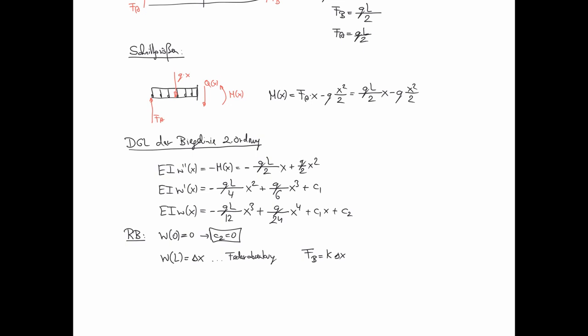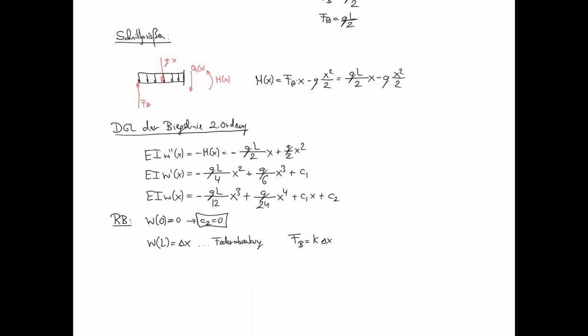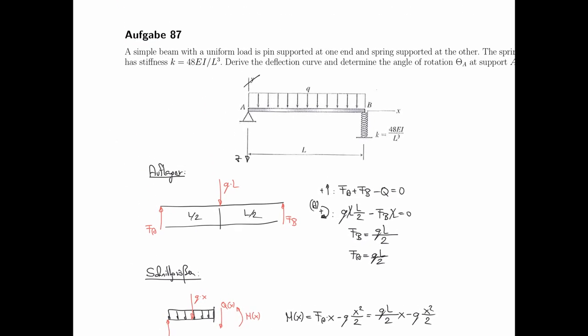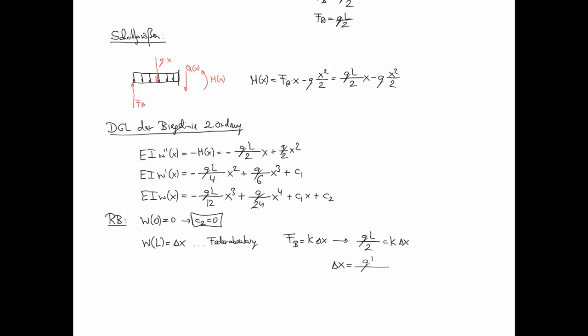Das heißt Delta X, oder anders gesagt, FB haben wir ja schon ausgedrückt. Das steht irgendwie da oben. Q mal L halbe ist K mal Delta X. Beziehungsweise Delta X ist mit dem oben gegebenen K von 48 EI durch L der dritten: Q mal L der vierten durch 96 EI. Sprich das W an der Stelle L ist genau Q L der vierten durch 96 EI. Das müssen wir einsetzen.